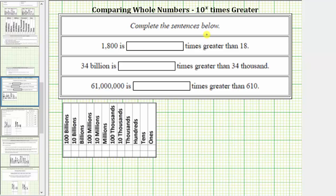We're asked to complete the following sentences by determining how many times greater one whole number is compared to another. In the first sentence, we're given: 1,800 is how many times greater than 18. Before we answer this question, let's look at some simpler problems.